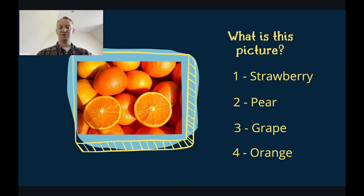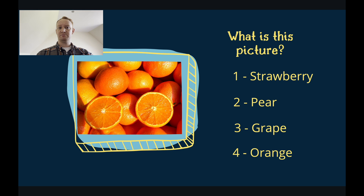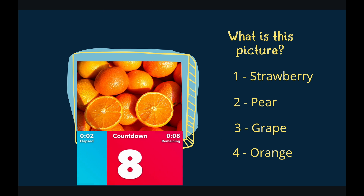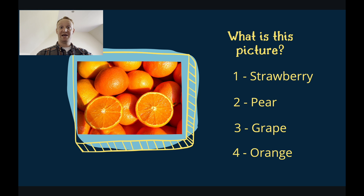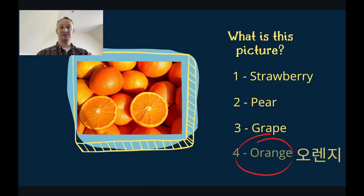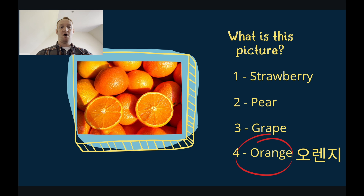What is this a picture of? Is it strawberries? Is it pears? Is it grapes? Or is it oranges? You have 10 seconds to answer. The answer is oranges. Oranges are orange in colour. One orange has been cut. Oranges are very juicy.